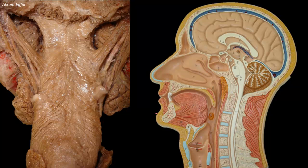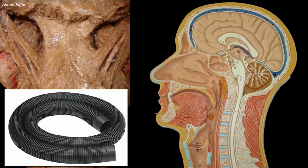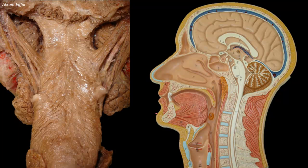The larynx, trachea, and bronchi are stented open by rings of stiff hyaline cartilage, in much the same manner as the reinforcements of a vacuum cleaner's hose. These reinforcements keep them from collapsing when negative pressure is applied during respiration.